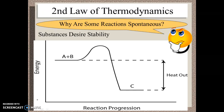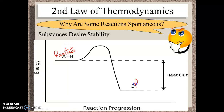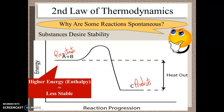If we think about stability in terms of energy, in a chemical reaction we can think about the energy that our reactants have and the energy that the products have. In a lot of cases we have an exothermic reaction where we start out with reactants which have higher energy or higher enthalpy.